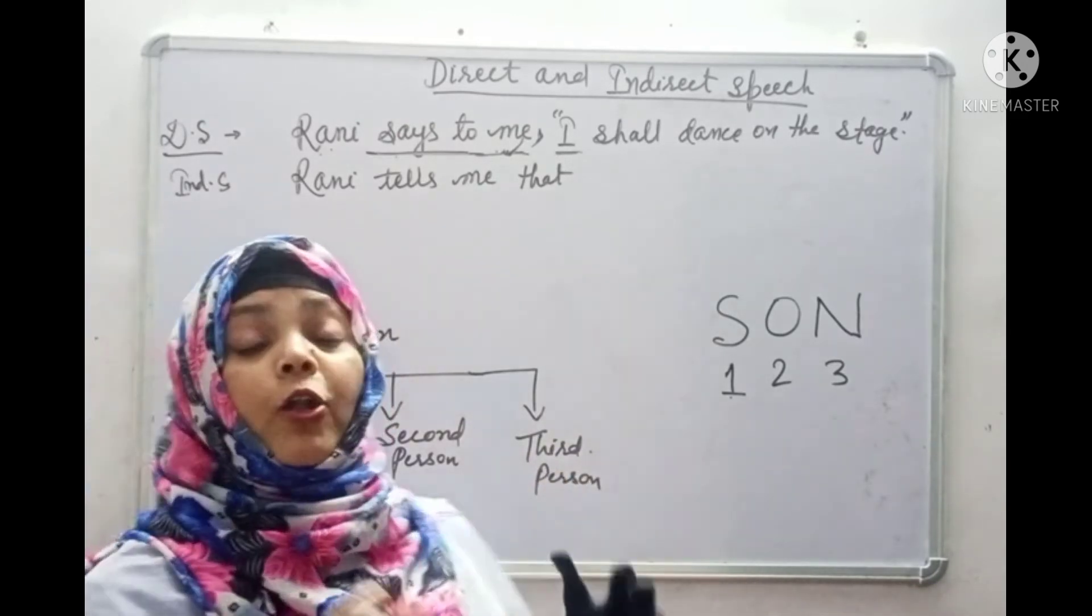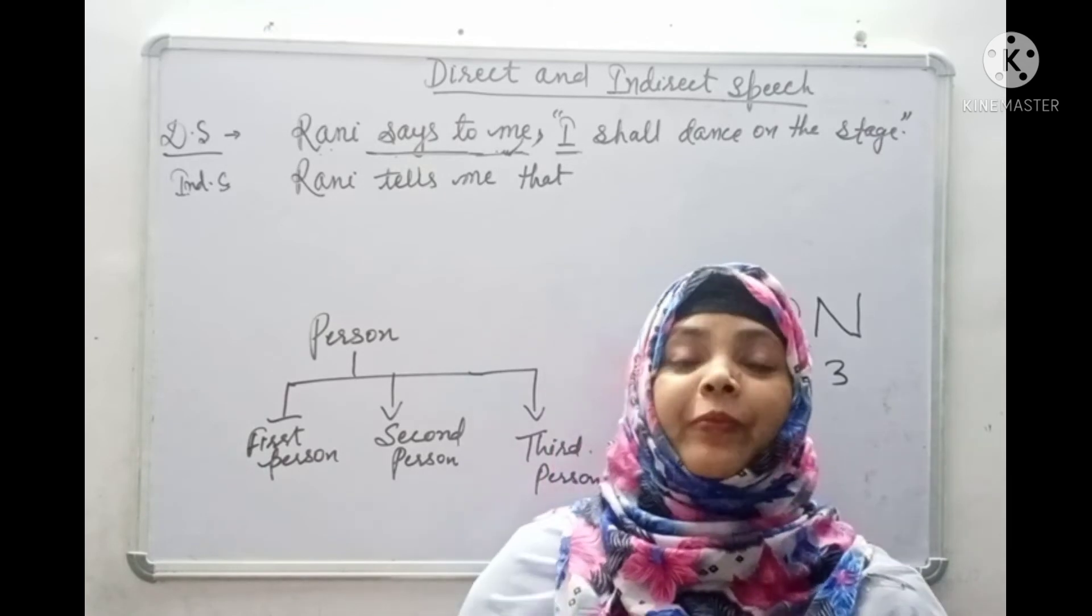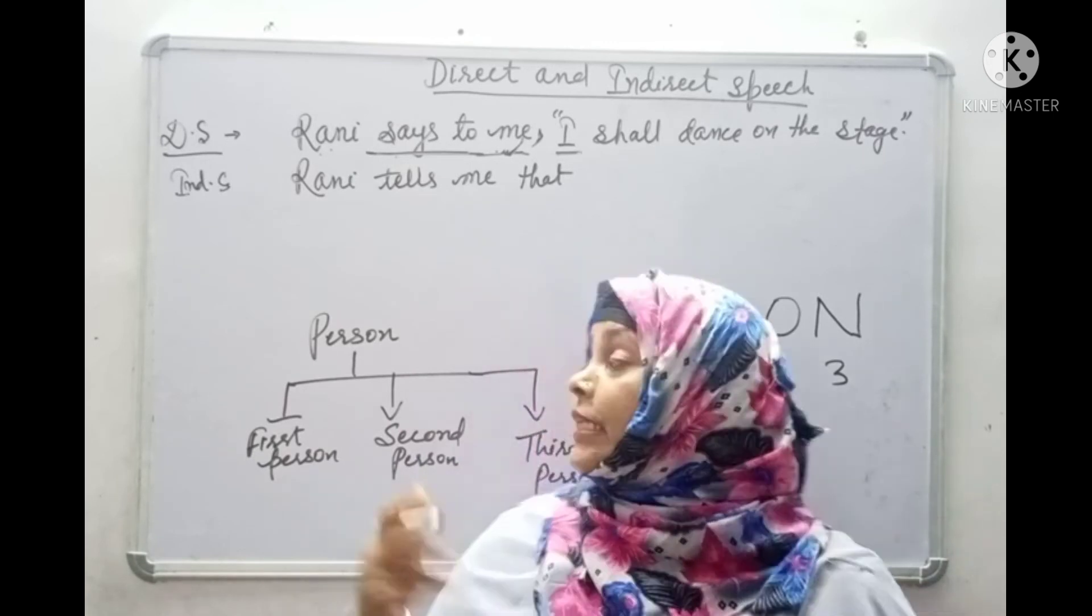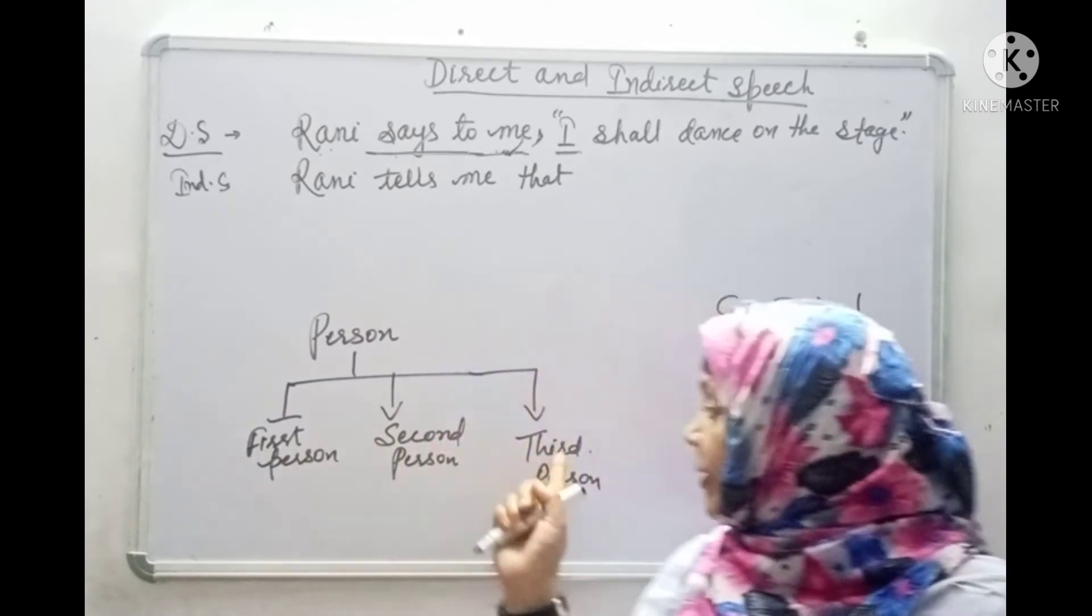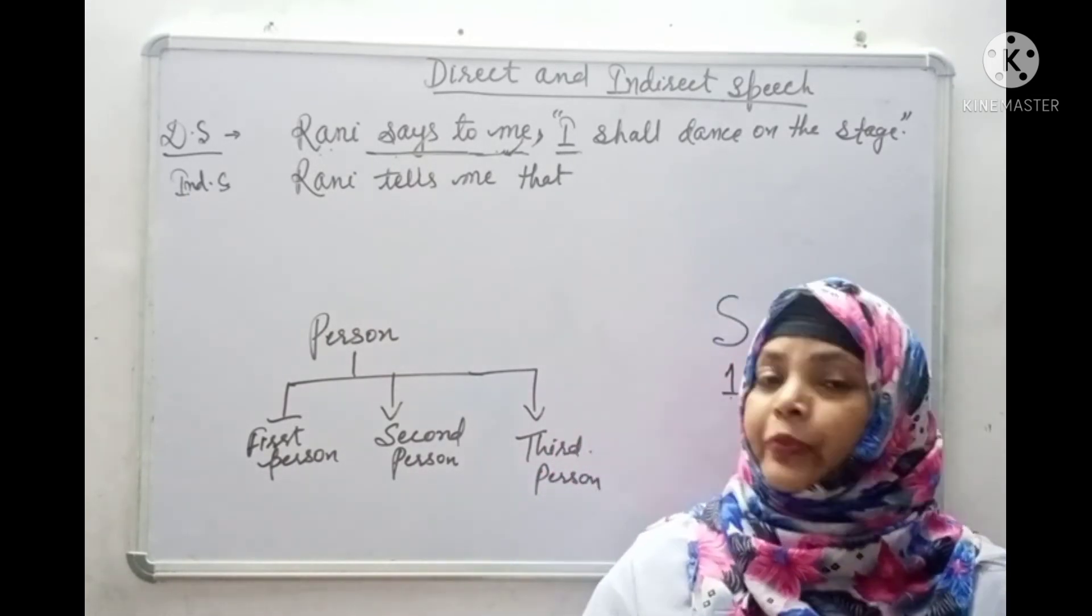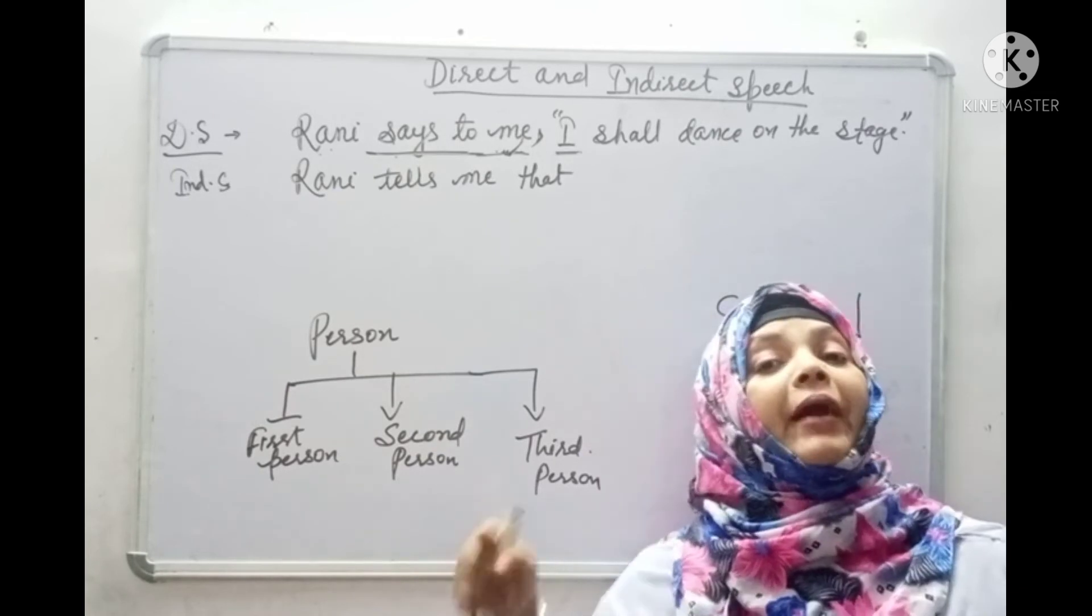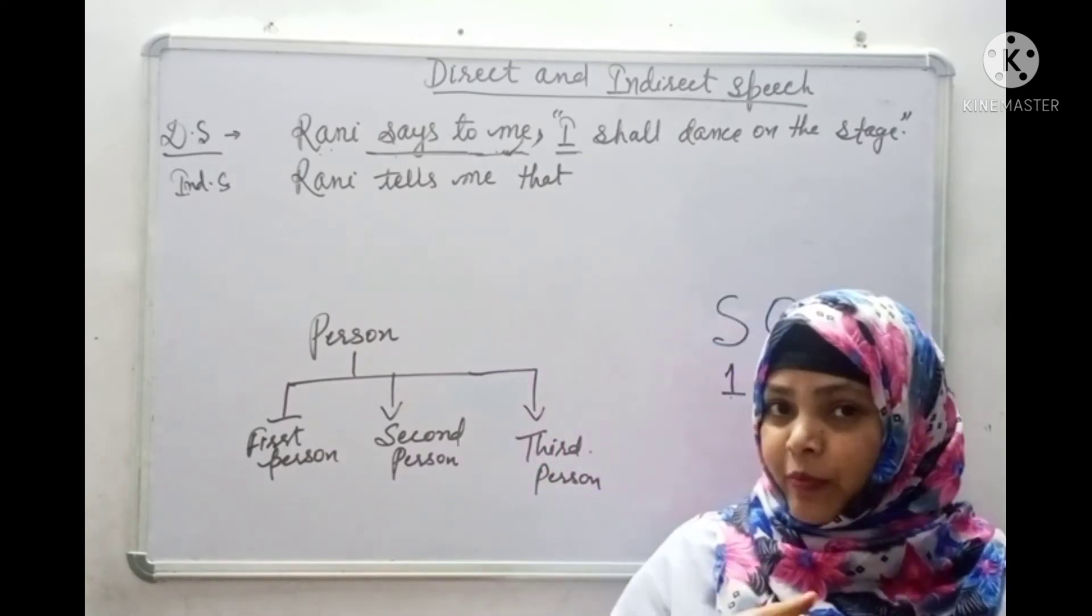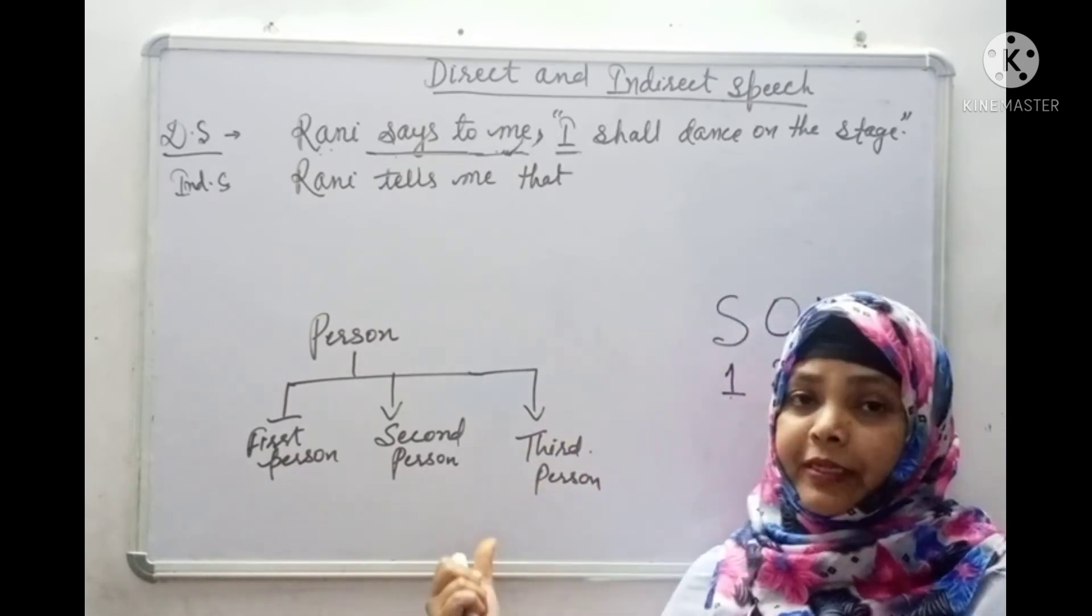Now, you want to know, what do you mean by first person? Then you know guys, that first person is that person who speaks. First person is the person who speaks. Second person is that person to whom we speak. Third person is that person about whom something is spoken. So first person is that person who speaks, second person is the person to whom we speak, and third person is about whom we speak.